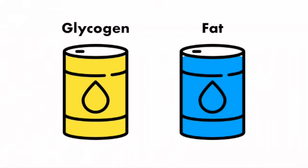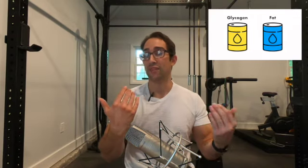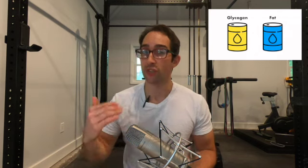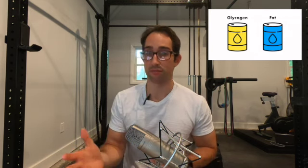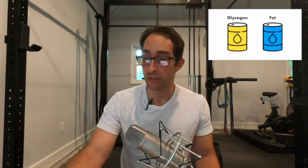So we have two canisters here. One canister is filled with glycogen — that's the stored form of carbohydrates, located in the muscles and liver. The other container is our fat storage: subcutaneous fat and visceral fat, the fat on the outside of the body and the fat on the inside surrounding the organs, which is problematic for our vitality. If you want to start to chip away at the fat canister, you need to understand that the glycogen canister is in your way.